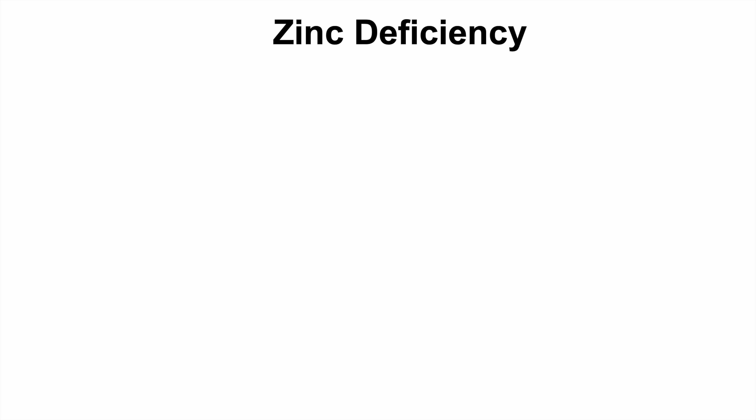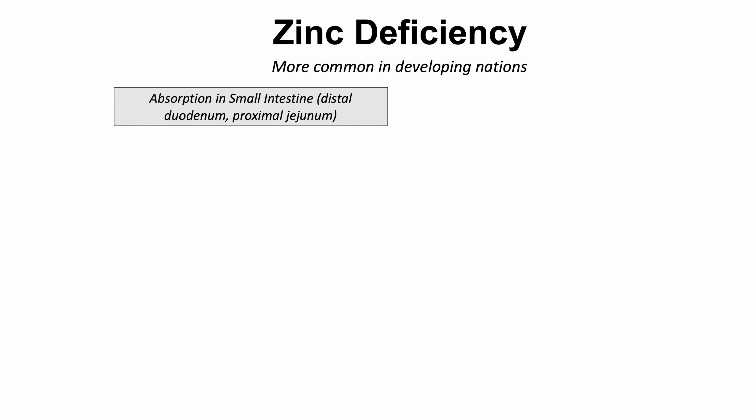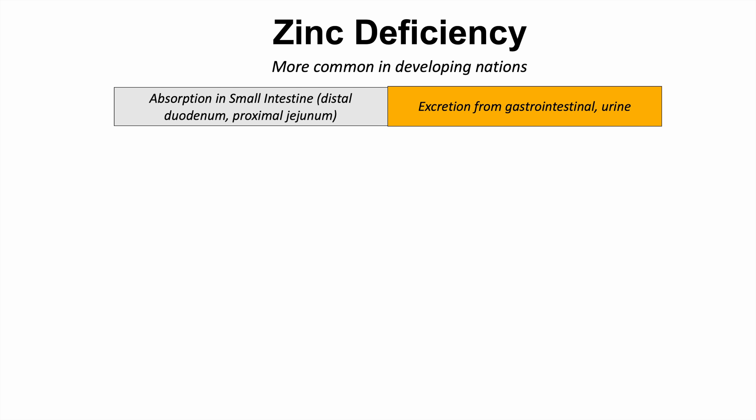Zinc deficiency is more common in developing nations. Zinc is absorbed in the small intestine — specifically the distal duodenum and proximal jejunum — and is excreted from the gastrointestinal tract, as well as in urine and sweat.